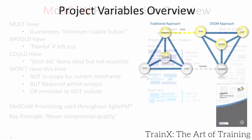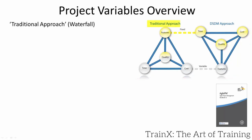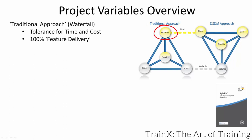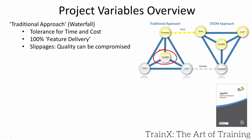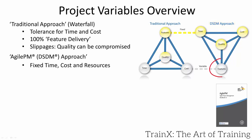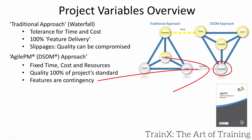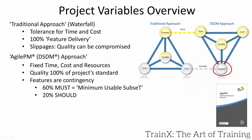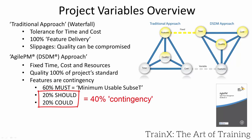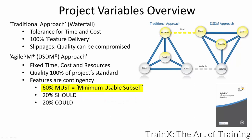All project management methods have triangular diagrams. A traditional approach delivers 100% of the features, even if some are minor, and uses tolerance for time and cost. In the event of project slippages, the separate quality testing stage can be rushed, leading to quality compromises. In the Agile PM approach, if we've done a good job with our estimates, we should be able to deliver all our musts, shoulds and coulds on time and on budget with known fixed resources. The quality of delivery will be 100% of the project's stated quality level. In the event of an issue affecting developer availability, the coulds can be de-scoped — and if necessary, the shoulds too — giving a 40% contingency while the musts still deliver the minimum usable subset.